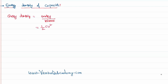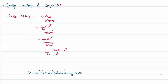We have already derived the energy stored in a capacitor as half CV squared. Dividing by volume gives us the energy density. We can rewrite it as half CV squared divided by volume, where volume equals the area of cross-section of the capacitor plates multiplied by the distance between the plates. The capacitance of a capacitor is epsilon naught times A divided by d.